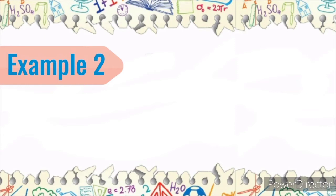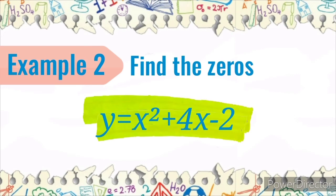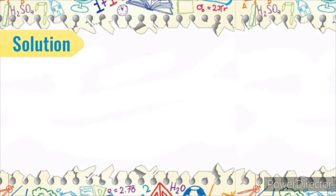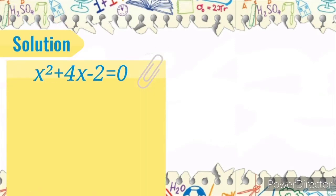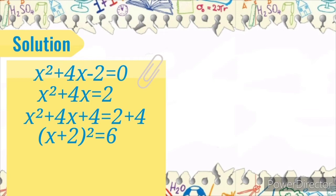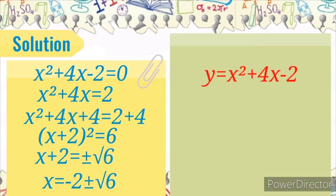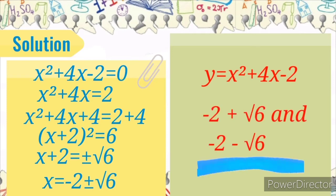Example 2: Find the zeros of the quadratic function y is equal to x squared plus 4x minus 2 using the completing the square method. Solution: x squared plus 4x minus 2 equals 0. Completing the square: x squared plus 4x plus 4 is equal to 2 plus 4. So x plus 2 squared is equal to 6. Then x plus 2 is equal to plus or minus square root of 6. The zeros are negative 2 plus square root of 6 and negative 2 minus square root of 6.